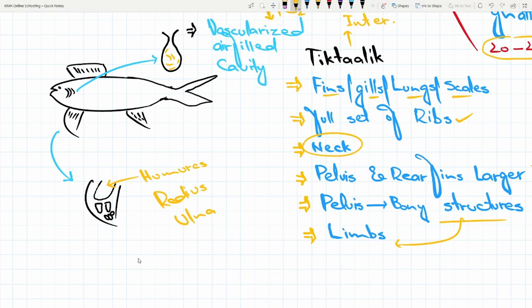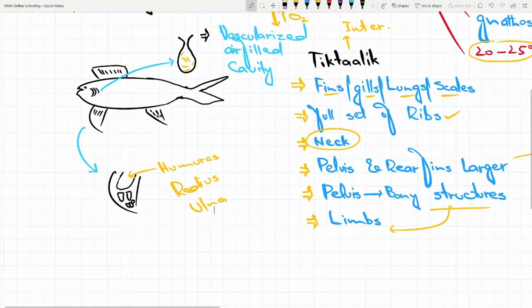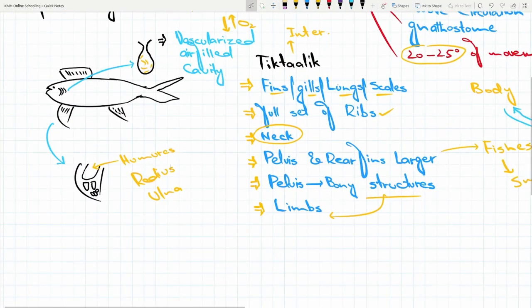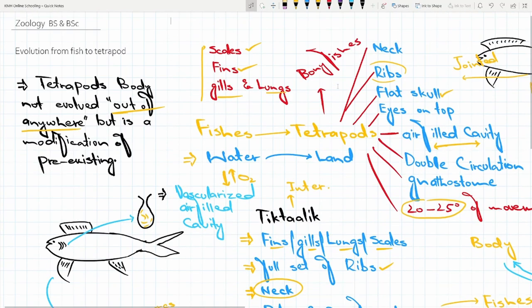This was a brief evolution from fishes to tetrapods. All this occurred during Devonian period, Devonian period.